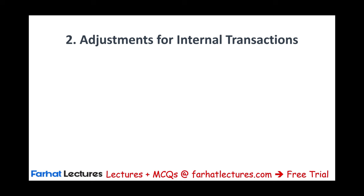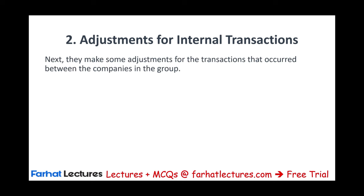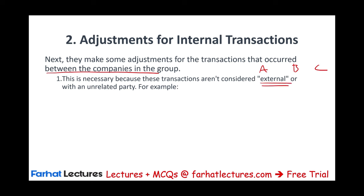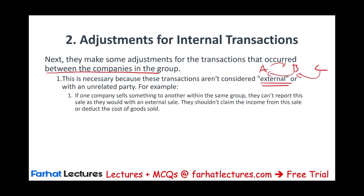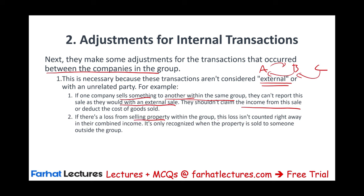Step two: we adjust for internal transactions. We make certain adjustments for transactions that occur between those companies — A, B, and C. This is necessary because these transactions are not considered external. If A sold to B, or C sold to B — those are internal transactions. If one company sells something to another company within the same group, they cannot report the sale as they would have if made to an external party. They should not claim the income from the sale or deduct cost of goods sold because it's between the group. If there is a loss from selling property within the group, it's only recognized when the property is eventually sold outside the group.